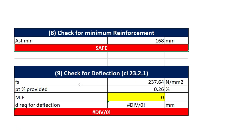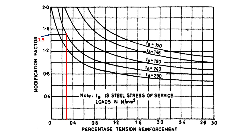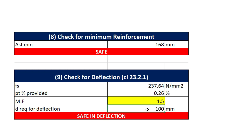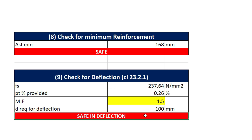Moving to the ninth step, in which we need to check if the slab is safe in deflection. The value of FS is calculated as 237.64 and the percentage of steel provided is 0.26%. Again we need to input the modification factor according to 0.26% of steel and FS equal to 237.64. According to Figure 4, the modification factor for 0.26% of steel corresponding to FS equal to 237 will be 1.5. So we got the required depth for deflection as 100 mm, and since we have already provided a greater depth, the slab will be safe in deflection.